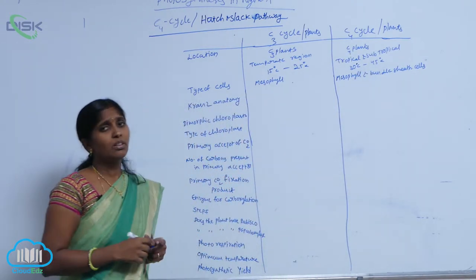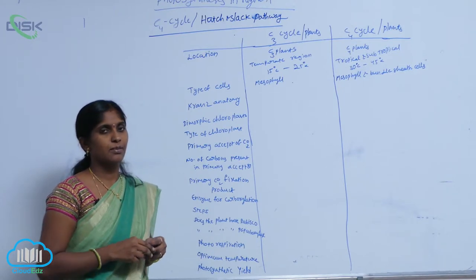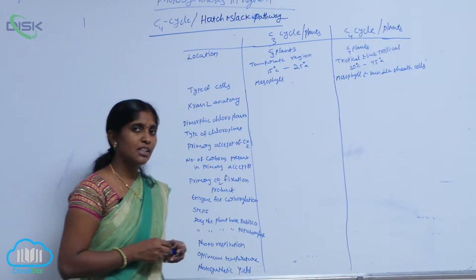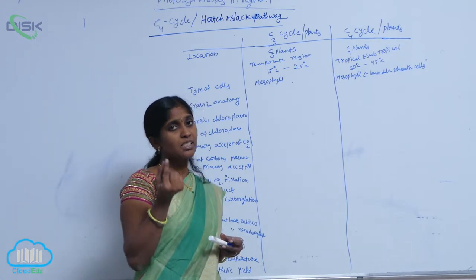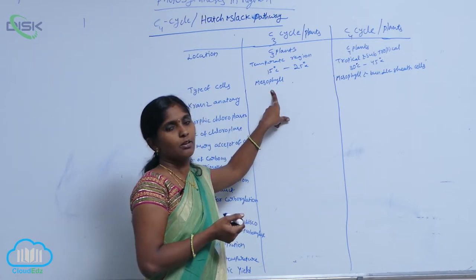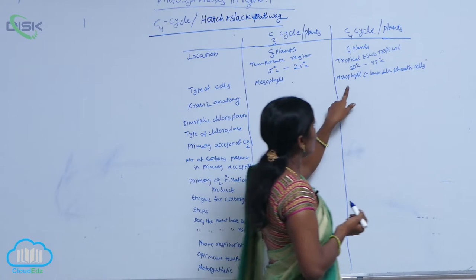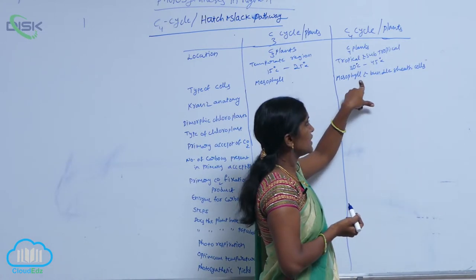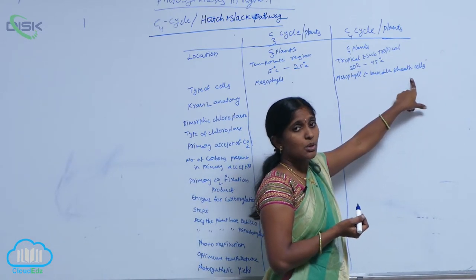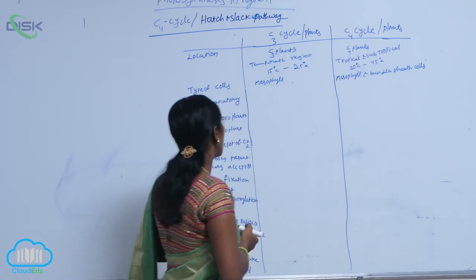What type of cells are involved in both cycles? In the C3 cycle, only a single cell type is involved: the mesophyll cells of the leaf. In the C4 cycle, both mesophyll cells and bundle sheath cells are involved — two cell types participate in the C4 cycle.